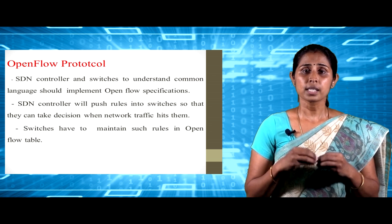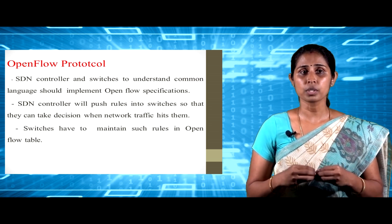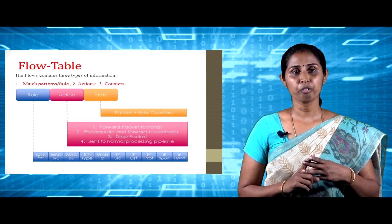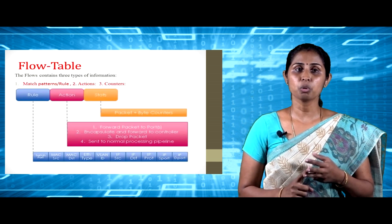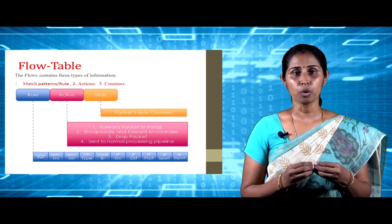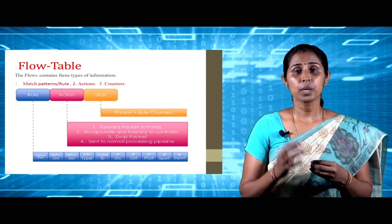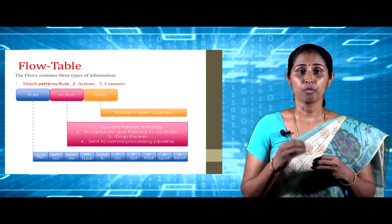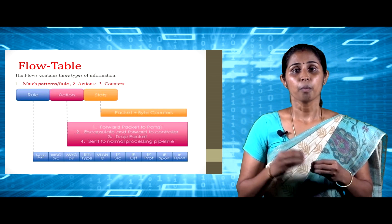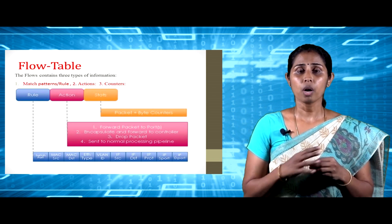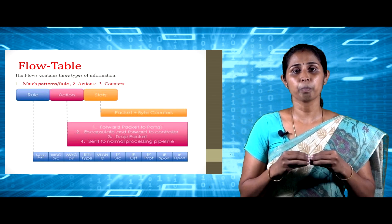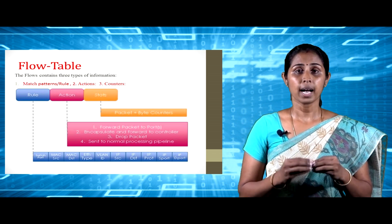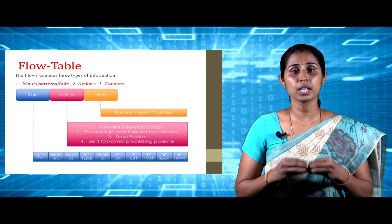In OpenFlow, such rules are called flows and are stored in flow tables. A flow contains three types of information: match pattern, action, and counters. The match pattern or rule is constructed from 12 different packet header fields with various bitwise values computed by the switch based on IP addresses in the packets. All packets matching the pattern predicates are said to belong to the same flow.